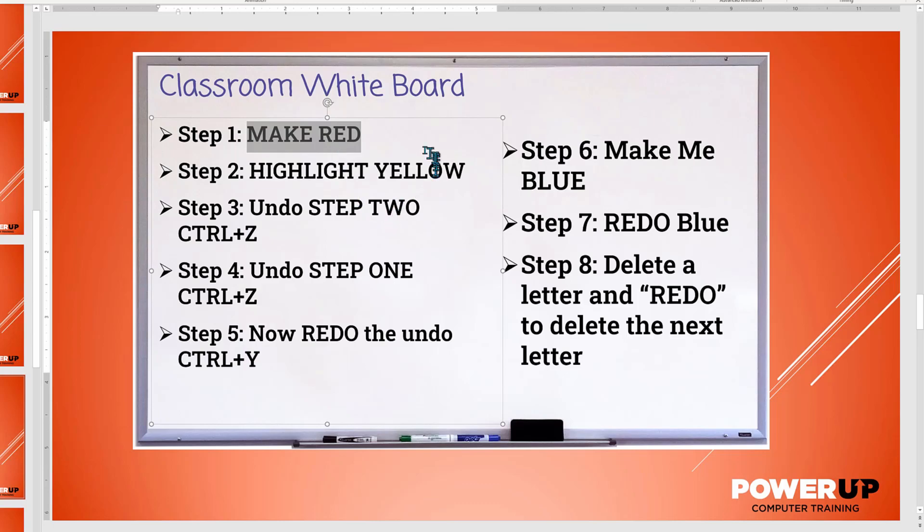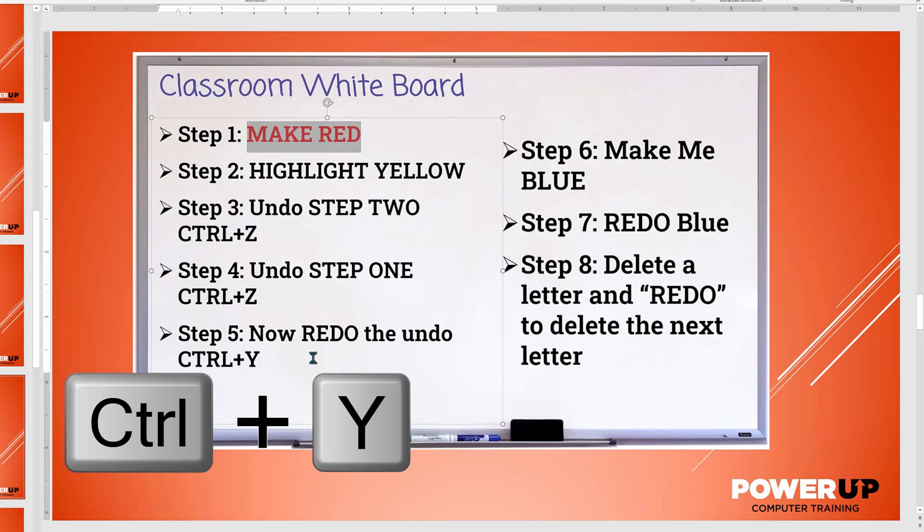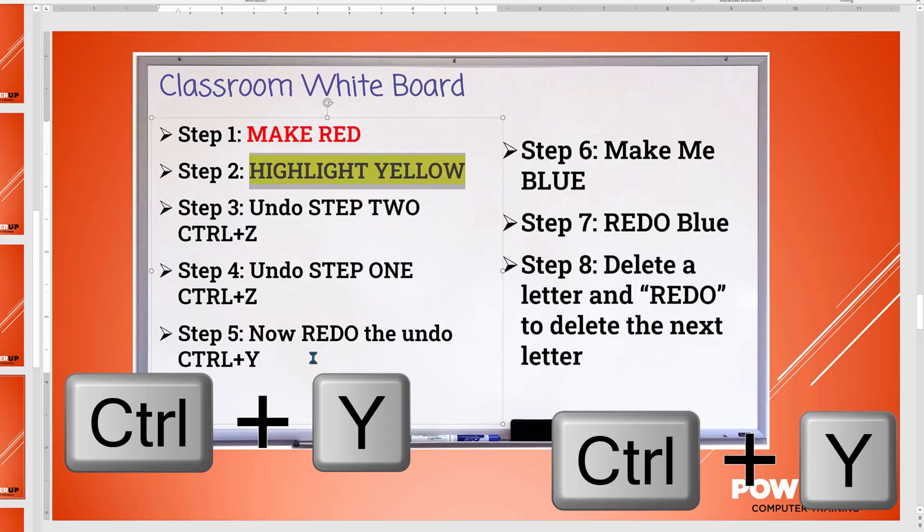The redo control Y command works differently. If you just did multiple undoes, it will reverse them and put them back in place. See how my redo command issued twice brings back the red font and then the yellow highlighting.